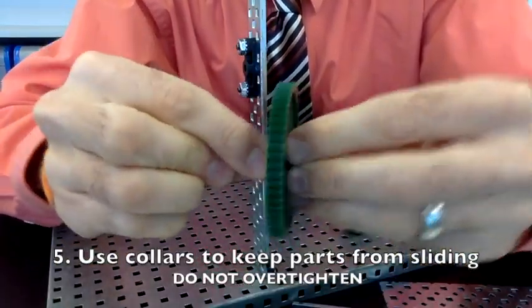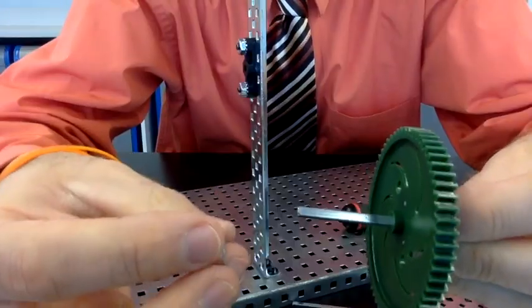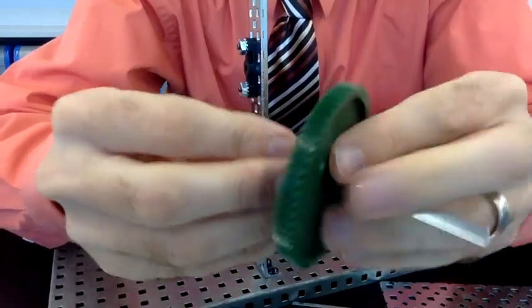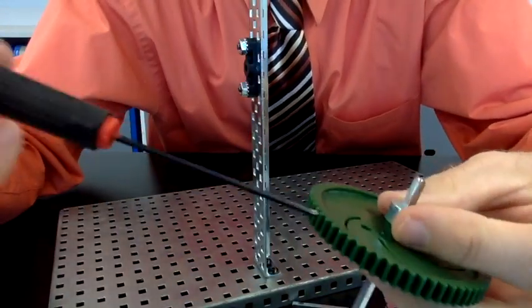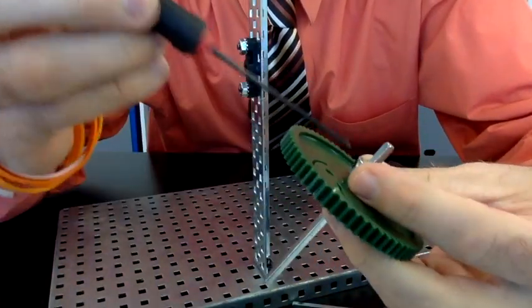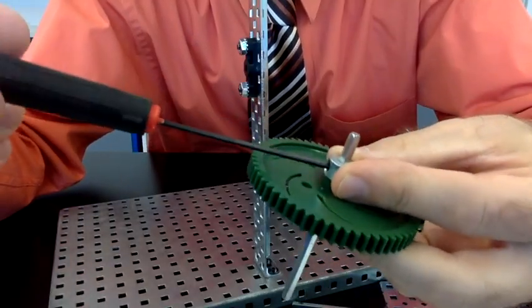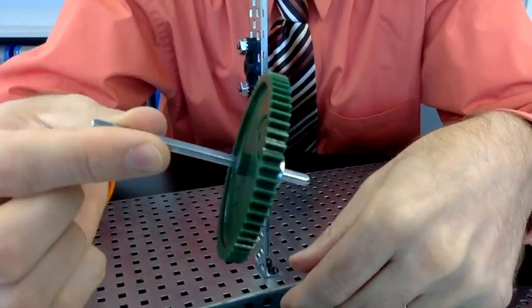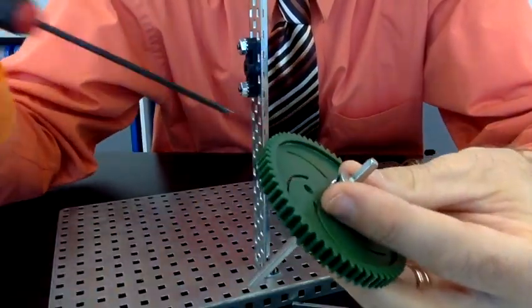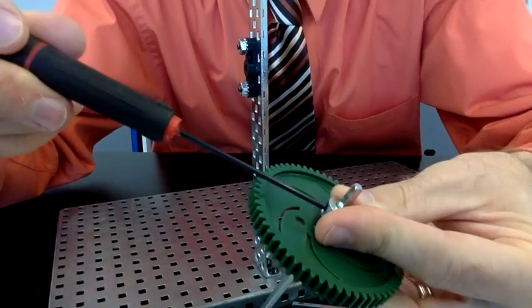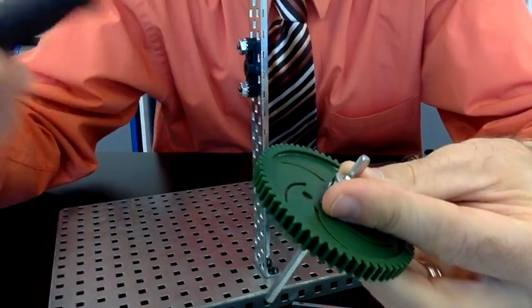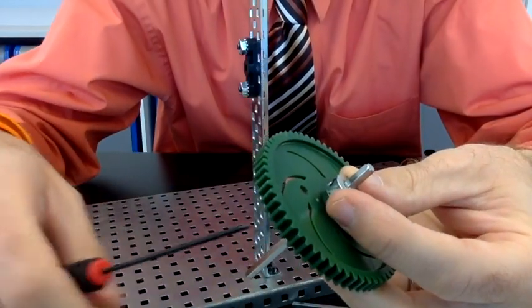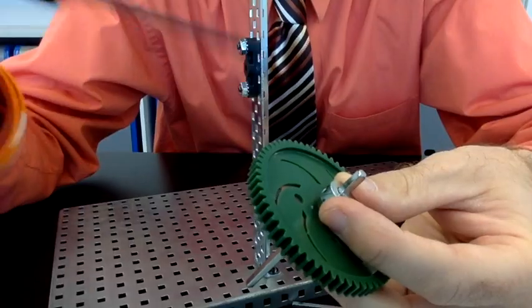Once again, when using collars, be sure you do not over tighten the set screw. You just want to tighten it until there is resistance. Also, make sure that when removing the set screw, you do not remove the entire set screw. They are very small and hard to find on the floor. If you do pop out a set screw, just put it back in.